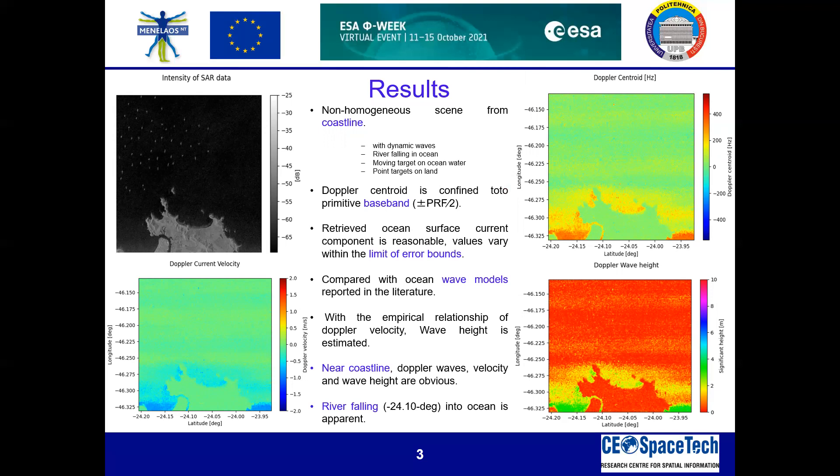On the left-hand side, we have Doppler velocity, which varies from minus 2 to 2 meters per second depending on the Doppler shift, either moving forward or backward. However, the retrieved surface component is reasonable and the values vary within the limit of error bounds. We have compared this with ocean models reported in the literature.